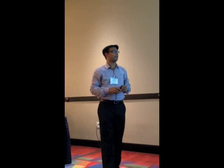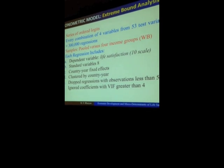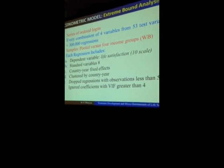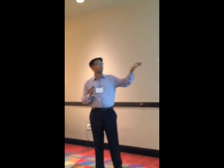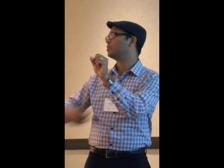Each regression has life satisfaction as the dependent variable, which asks: in general, how satisfied are you with your life these days? It's measured from one through ten. We control for a bunch of standard variables, which you'll see in the next slide. We have country-year fixed effects — we do not want to study macro variables, so we take that part out. We cluster by country-year, because every country has different cultures, norms, and understandings. Any regression where the number of observations was less than 500, we drop.